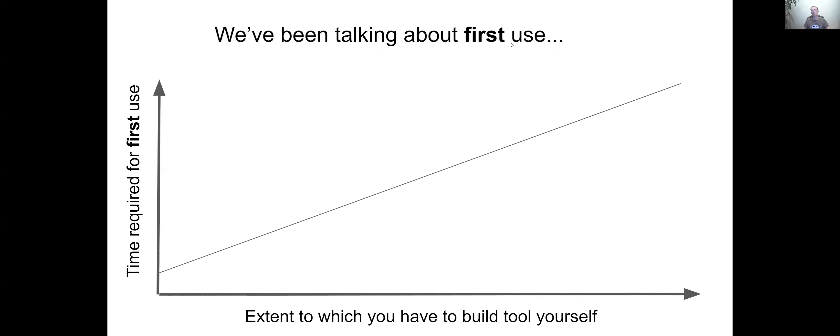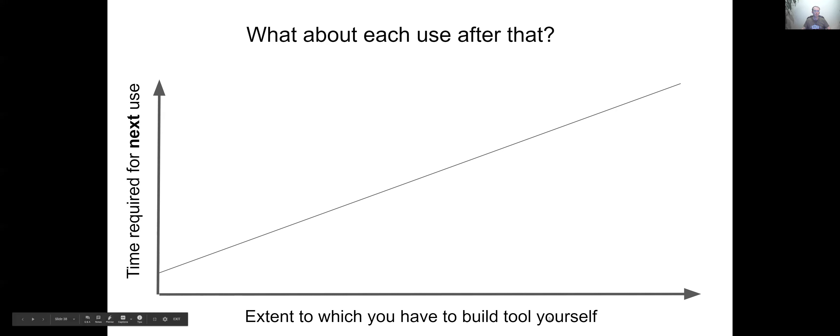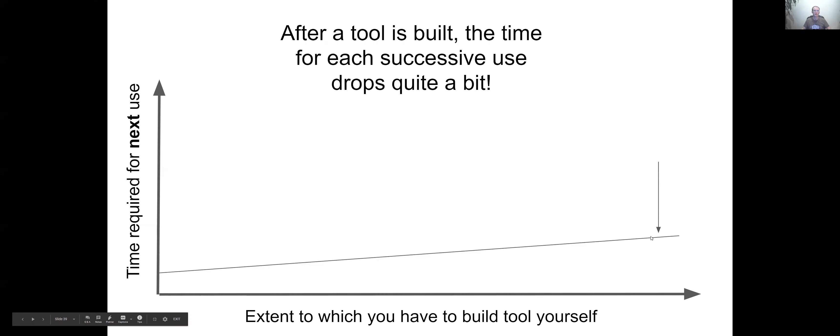So we've been talking about the very first time you use a tool to do something. But what if instead we talked about every use case that recurs? Because a lot of the work that we do, even if the information itself that is being manipulated is changing, the actual workflows are somewhat repetitive. And if we've had some experience with those workflows, then we understand kind of the conditions and boundaries of what can change, sort of like the various fields and drop down menus that we saw in setting up a Zoom call. So if we consider the time required for the next use after you've already built the tool, well hey, this is kind of the magic of Python. After the tool is built using Python, the time for each successive use drops quite a bit.